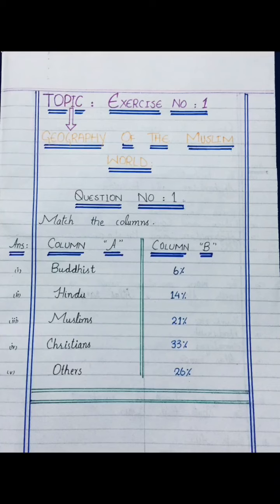The columns are not in the chapter — I have told you that we will make the objectives ourselves. You have to write Column A and Column B. Column A lists: Buddhist, Hindu, Muslims, Christians, and Others. Column B has the percentages: Buddhist 6%, Hindu 14%, Muslims 21%, Christians 33%, Others 26%. Draw the ending line. Write this in your notebook.